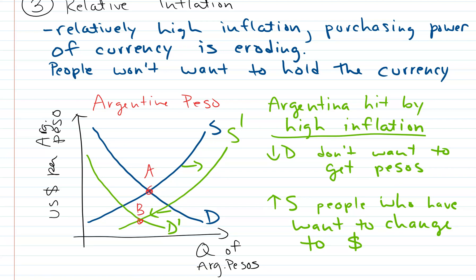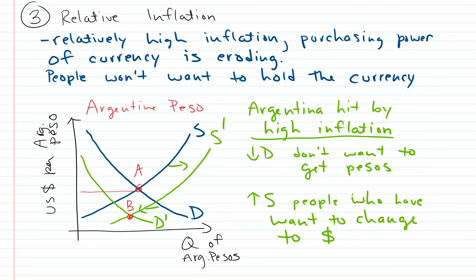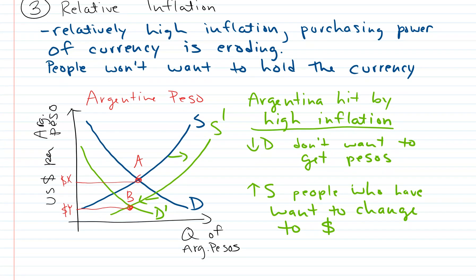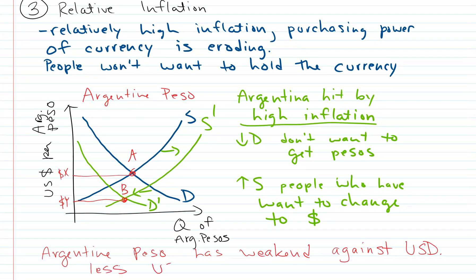We end up at a new equilibrium, moving from point A down to point B. The quantity isn't the most important thing here — what matters is the price. Before, holders were getting more US dollars per peso; now they're getting less. The Argentine peso has clearly weakened against the dollar.